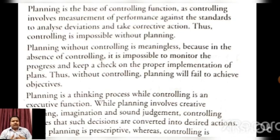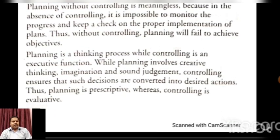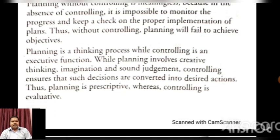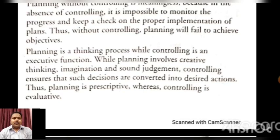Without controlling, planning will fail to achieve its objective — यानि without controlling हम यह नहीं पता कर सकते कि planning ने अपना goal achieve किया या नहीं। Planning is a thoughtful process while controlling is an executive function — planning में हम सोचते हैं और controlling में उसी सोच को implement करते हैं. While planning involves creative thinking, imagination and sound judgment, controlling ensures that such decisions are converted into desired action. The planning is prescriptive and controlling is evaluative.